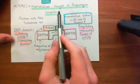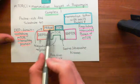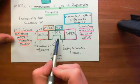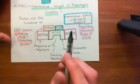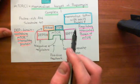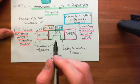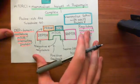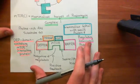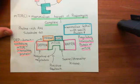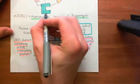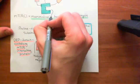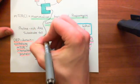Now we want to see how protein kinase B is going to activate mTORC1. It's going to do this in two ways. I should say that this is still controversial — it's not fully understood how protein kinase B activates mTORC1. But what is known is that it phosphorylates PRAS40.